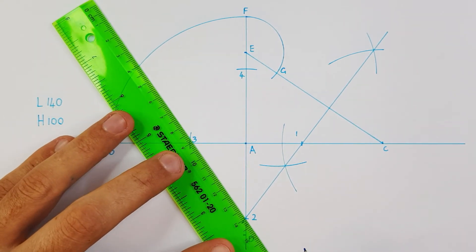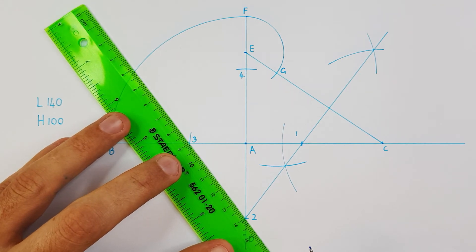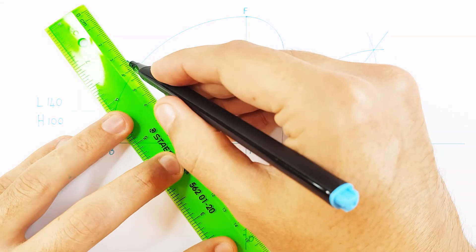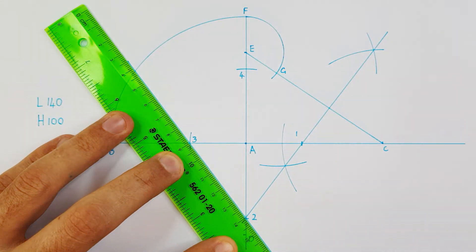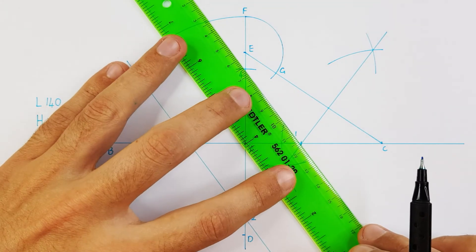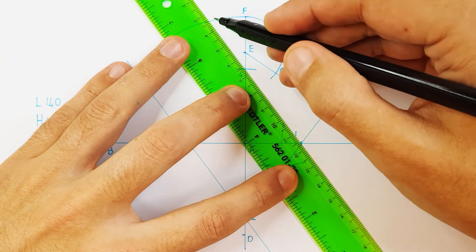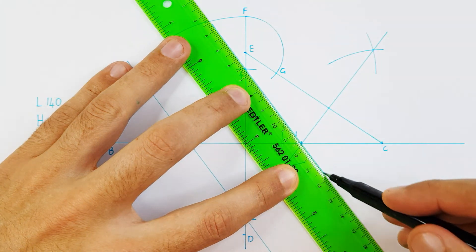For the last part of my constructions, I will take my ruler and join point 2 and 3. This should be a long construction line. I will do the same for point 1 and 4, 3 and 4, and 1 and 2 is already done.